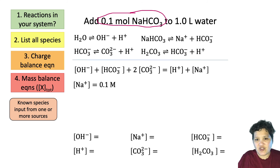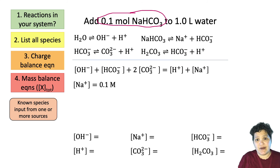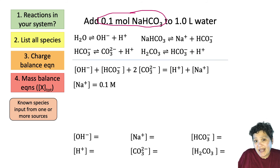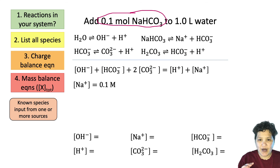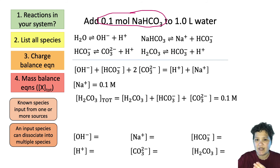Sodium is always a spectator ion, so we have 0.1 molar sodium. Bicarbonate, however, will participate in all the reactions identified earlier. We started with 0.1 molar bicarbonate, and it can end up in several species. So we can say the total amount of carbonic acid species — carbonic acid plus bicarbonate plus carbonate — all equals 0.1 molar.